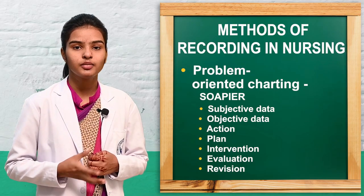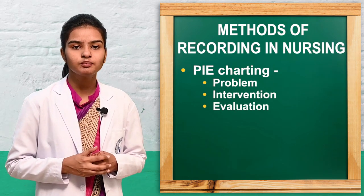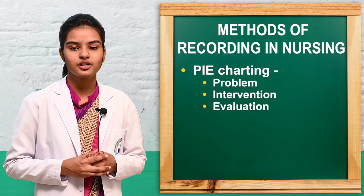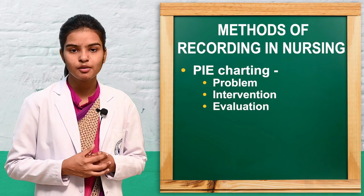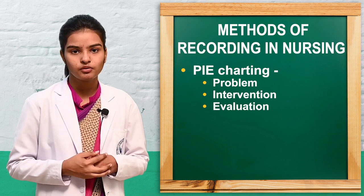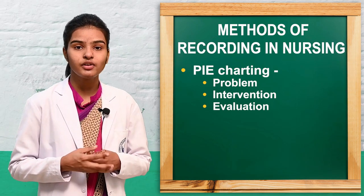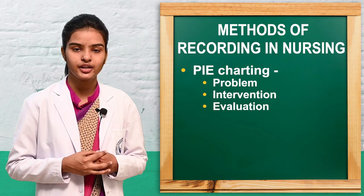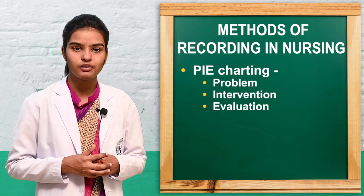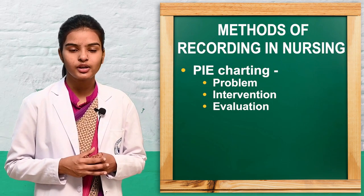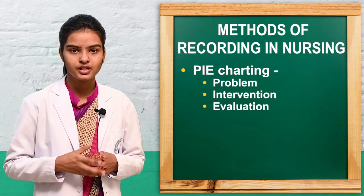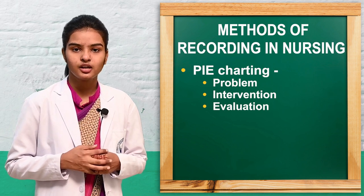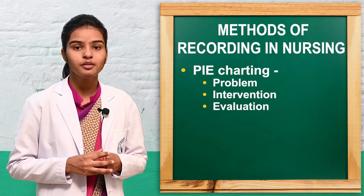Next, moving towards PIE charting. The full form of PIE charting is: P stands for problem statement, I stands for intervention, and E stands for evaluation. For example, documenting the problem statement — if the patient is complaining about pain at 7 out of 10, that will be the documentation of P in PIE charting.